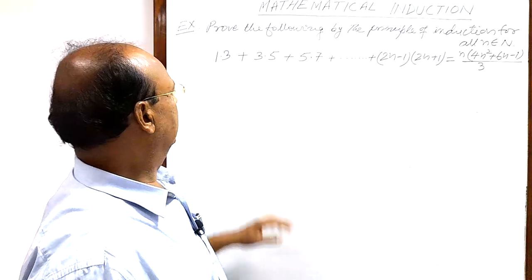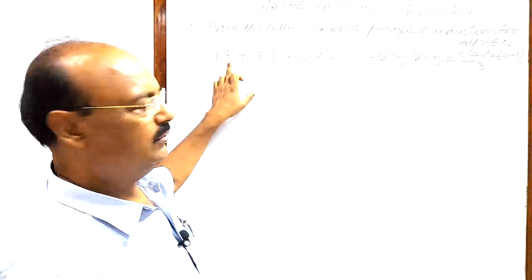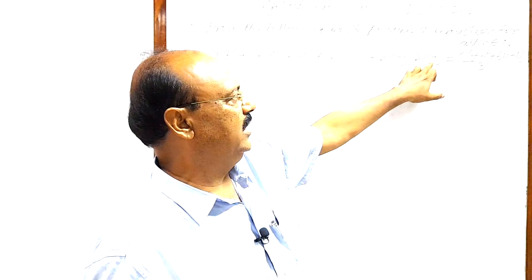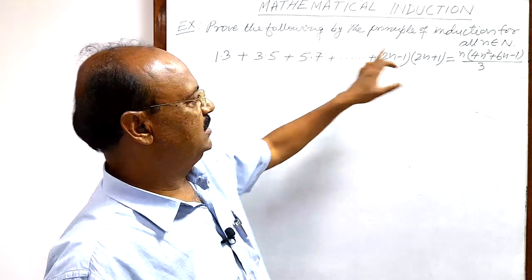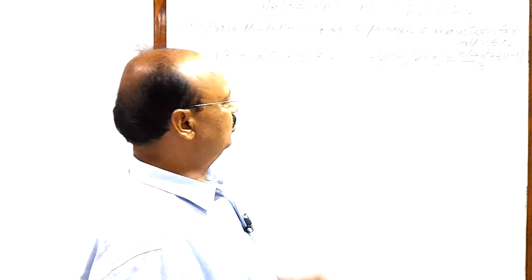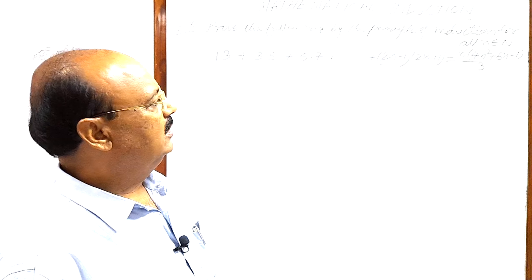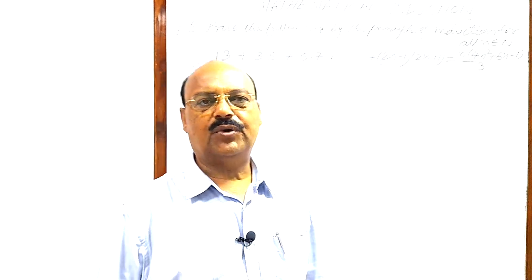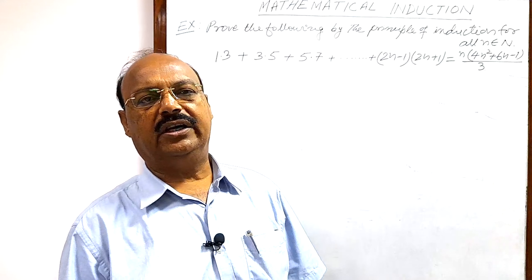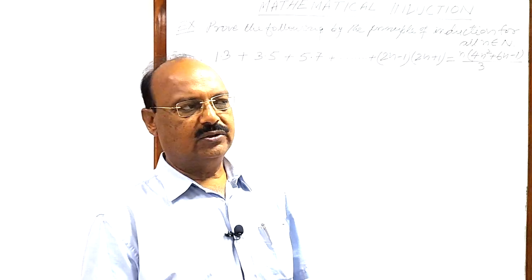We can observe that the first term is 2×1+1 = 3, and the nth term is (2n−1)(2n+1), so the total number of terms is n. We can prove this very easily by the principle of mathematical induction. In previous videos we have discussed what the principle of mathematical induction is and how we can apply it for solving this type of problem.